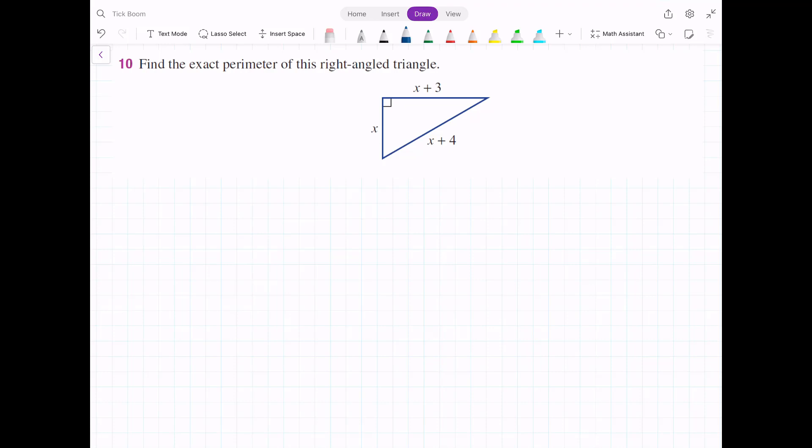As is the case with most right-angled triangles, we can start by thinking about Pythagoras. By Pythagoras, we know that the square of the hypotenuse is equal to the sum of the square of the other two sides. In this case, our hypotenuse is x plus 4, so (x + 4)² will equal x² plus (x + 3)².